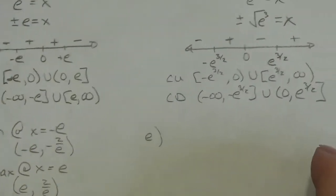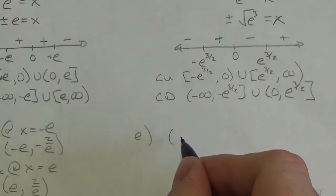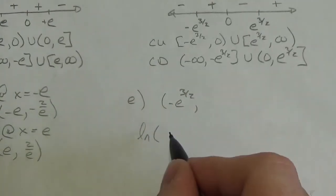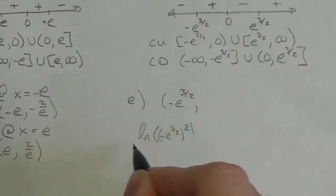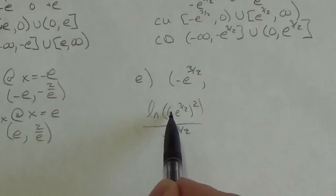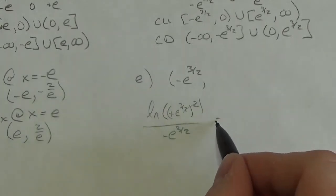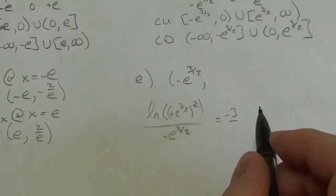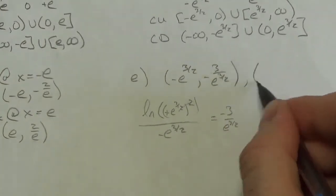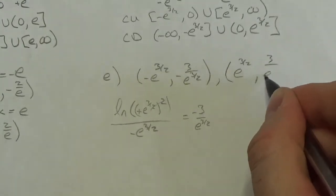For the inflection point coordinates at x equals negative e to the three-halves: plugging into f(x), the square makes the argument positive and cancels with the denominator's exponent, leaving natural log of e cubed, which equals three. The denominator is negative e to the three-halves, giving y equals negative three over e to the three-halves. At positive e to the three-halves, y equals positive three over e to the three-halves.